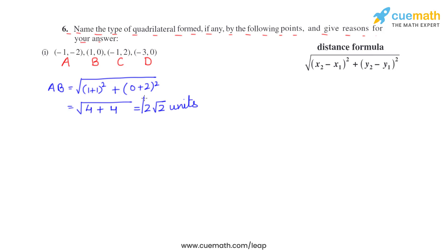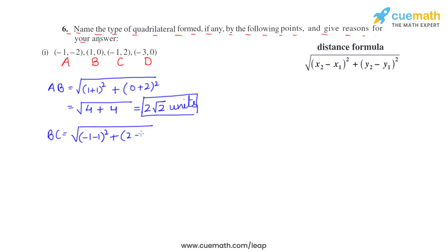Now let's find BC using the same formula: (−1 minus 1) whole square plus (2 minus 0) whole square = (−2)² + (2)² = 4 + 4 = 8. So BC = 2√2 units.